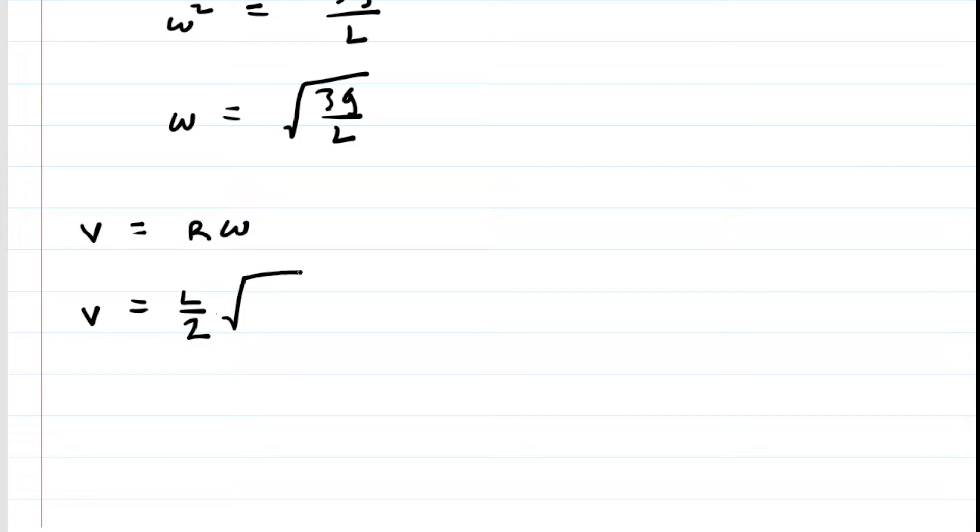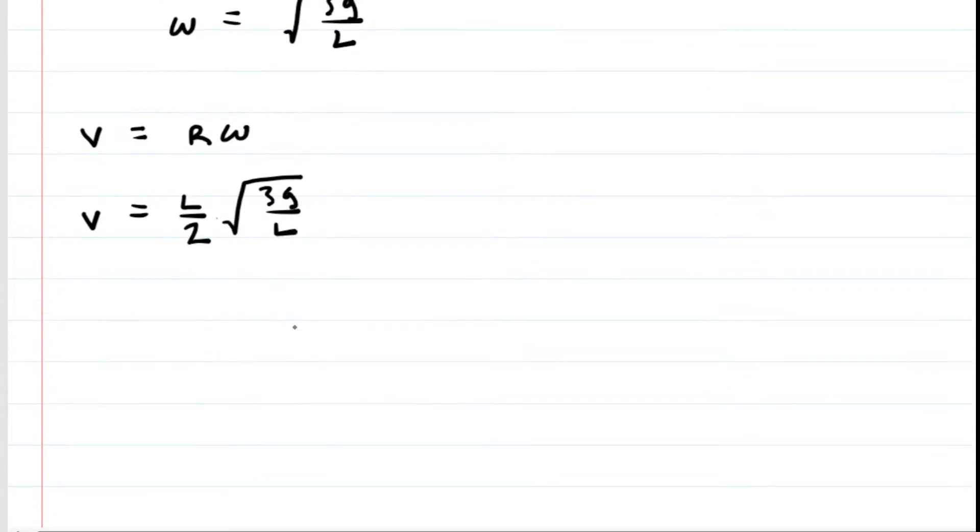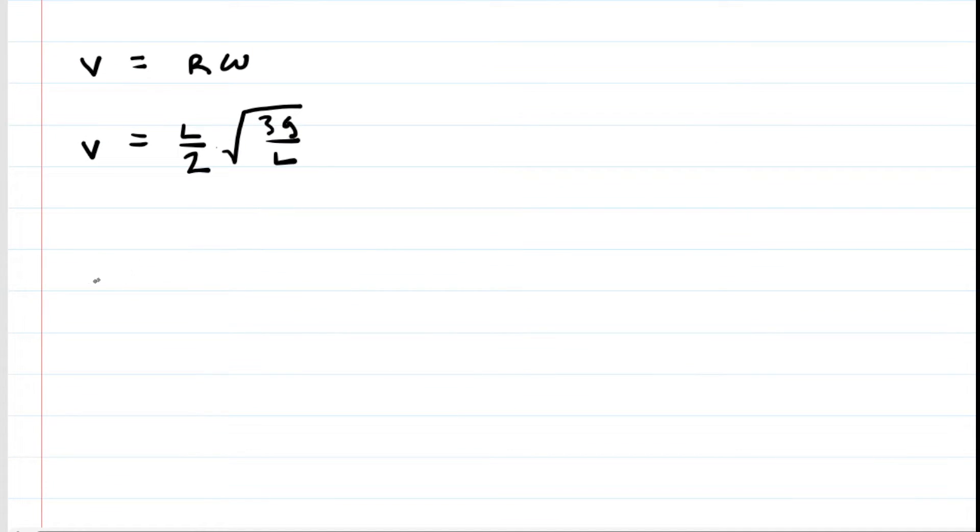And then for omega, we have that square root of 3G over L. Now that would be an acceptable answer, but we're going to clean it up just a little bit to make it look slightly more attractive. And to do that, we'll take L divided by 2 and we'll do a little bit of an algebraic trick. What we'll do is first artificially square it, and then to undo the squaring, take the square root.